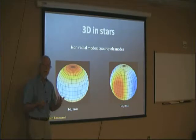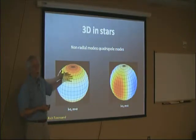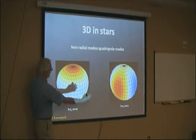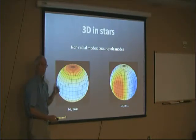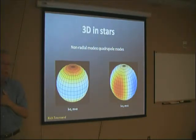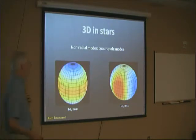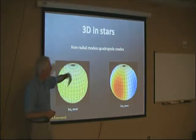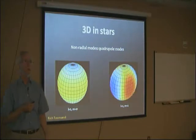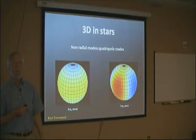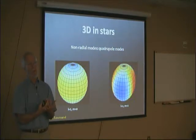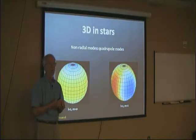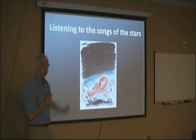Here are what we call quadrupole modes in a star. This one has got two nodes which are lines of latitude — the poles swell up while the equator comes in, then the equator goes out and the poles contract, with red and blue showing temperature variation. You can also have nodes which are lines of longitude, producing traveling waves which rotate. That provides the wonderful opportunity to see the rotation inside of a star — something we would never have any other way to determine.